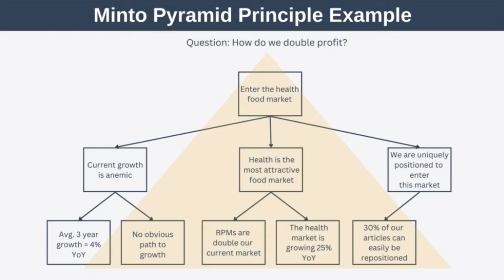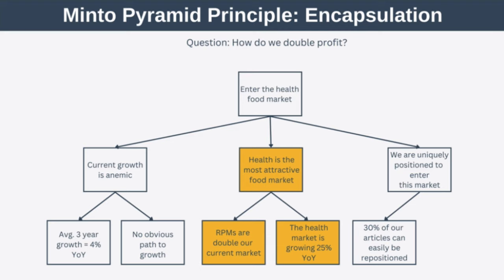Before we look at how to use the Minto Pyramid to give a presentation, you need to know two more things. The first is encapsulation, which simply means that each box should capture or summarize the main point of all the boxes below it. For example, the box containing 'health is the most attractive food market' summarizes all the information in the two boxes below it.